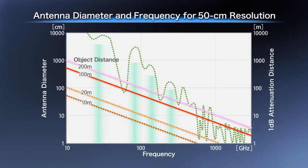This graph shows the antenna diameter and object distance for distinguishing an object 50 centimeters in size by millimeter waves.